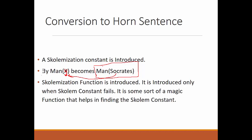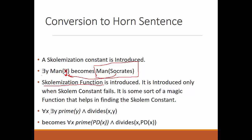Skolemization constants help us eliminate the existential quantifier, making the sentence a horn sentence. If the Skolem constant fails to eliminate the existential quantifier, we use a Skolemization function — essentially a function or algorithm that removes the existential quantifier. The universal quantifier is fine to keep, since horn clauses only require the removal of existential quantifiers.